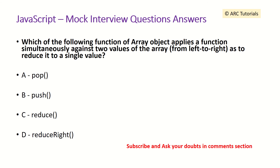Which of the following functions of the array object applies a function simultaneously against two values of the array from left to right so as to reduce it to a single value? Read the question carefully because the answer is right there. The answer is the reduce method, because it will take all the values of the array and reduce them to a single value.